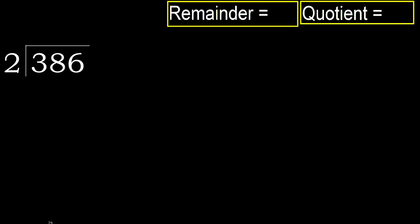386 divided by 2. 3 is not less, so we work with 3. 2 multiplied by which number is nearest to 3 but not greater? 2 multiplied by 2 is 4 — 4 is greater. 1 multiplied by 2 is 2 — 2 is not greater. So the first digit is 1.